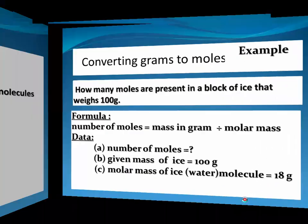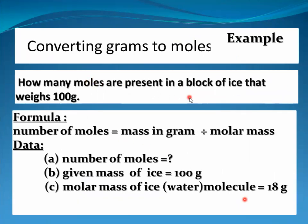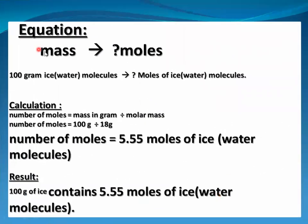Another example — converting grams to moles. How many moles are present in a block of ice that weighs 100 grams? Formula: number of moles = mass in grams ÷ molar mass. Given mass is 100 grams. Molar mass of ice, which is water: formula H₂O, 2 grams hydrogen and 16 grams oxygen gives 18 grams per mole. Calculation: 100 ÷ 18 = 5.55 moles. So 100 grams of ice contains 5.55 moles of ice.